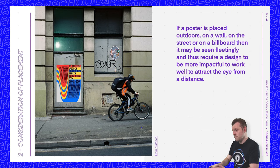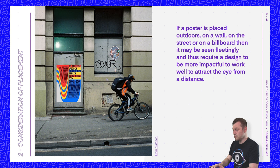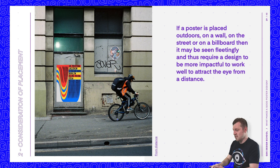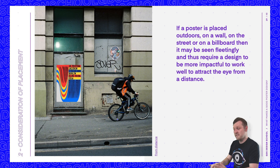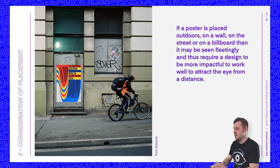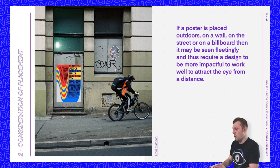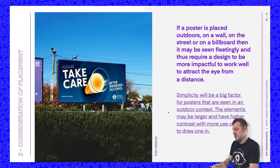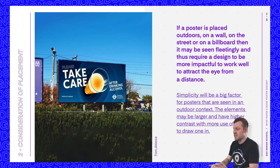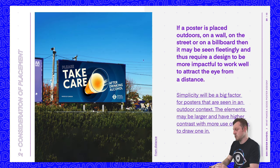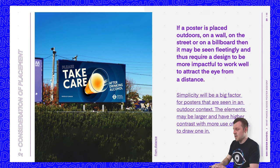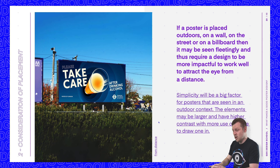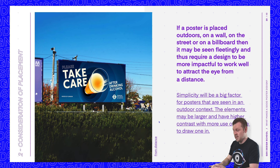For example, if a poster is placed outdoors — on a wall, on the street, or on a billboard — then it may be seen fleetingly and thus require a design to be much more impactful to attract the eye from a distance. Simplicity will be a big factor for posters seen in an outdoor context. The elements may be larger and have higher contrast with more use of space to draw one in.